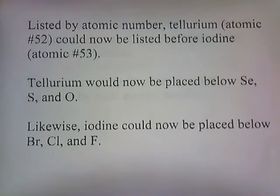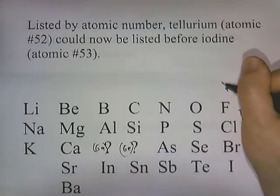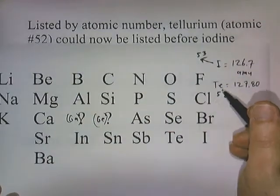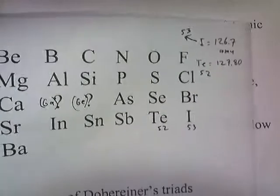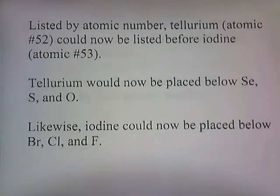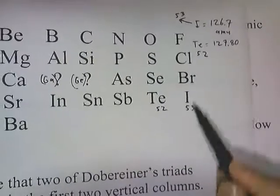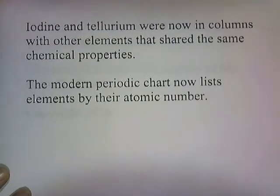Listed by atomic number, tellurium (atomic number 52) could now be correctly placed before iodine (atomic number 53). Tellurium is now placed below selenium, sulfur, and oxygen, and iodine is placed below bromine, chlorine, and fluorine. Iodine and tellurium were now in columns with other elements that shared the same chemical properties.